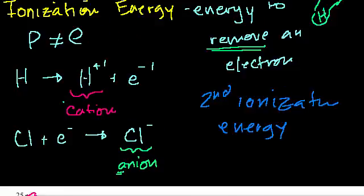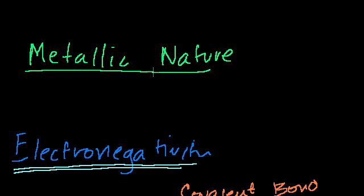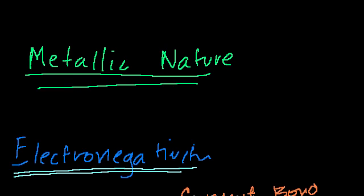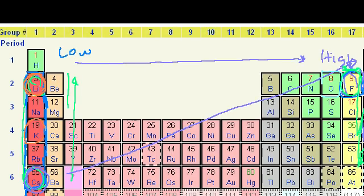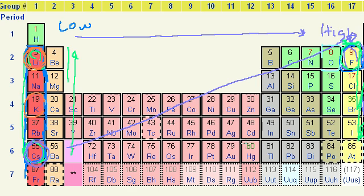Another trend is the metallic nature of an element. I imagine metallic nature as: conducts electricity, is shiny, is malleable — you can bend it without it cracking. But in chemistry, metallic nature really just means a willingness to give away electrons.